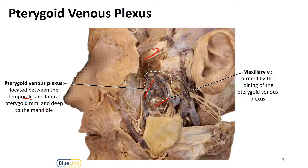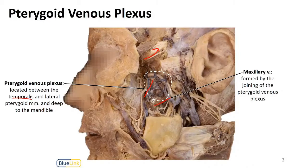This will receive veins from all of the region, so tributaries from the region around, and then drain into the maxillary vein. So all of this plexus comes together to form the maxillary vein.